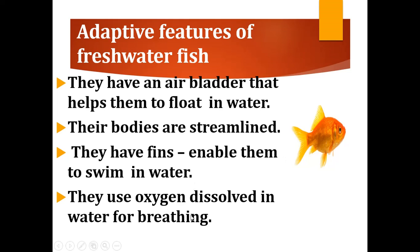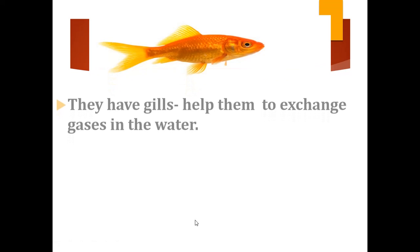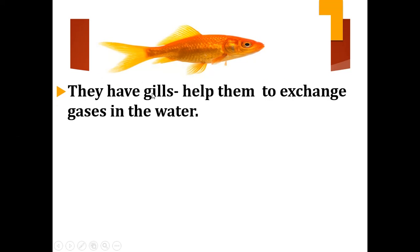Fish use oxygen which dissolves in water for breathing. Oxygen mixed with water is called dissolved oxygen. Fish have gills which help them to exchange gases in the water.